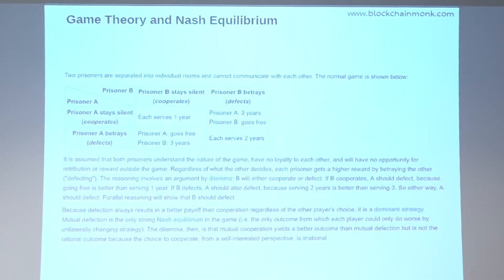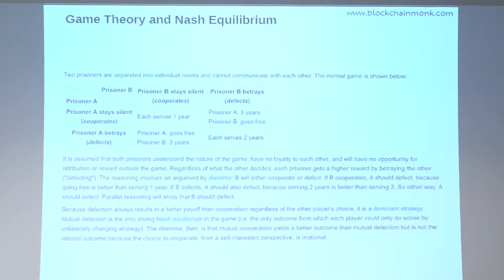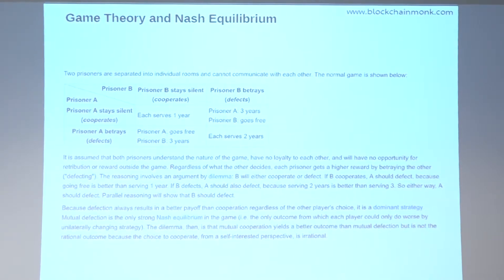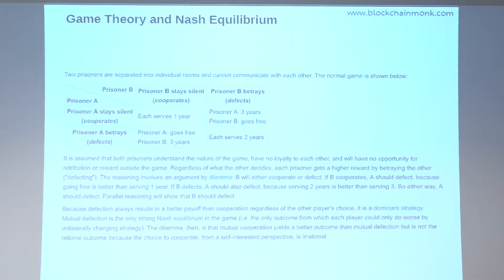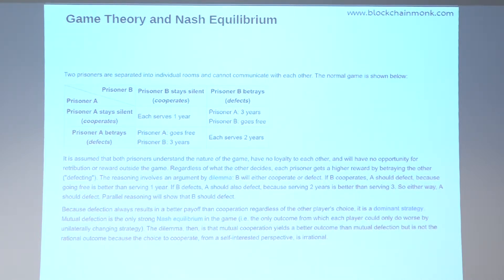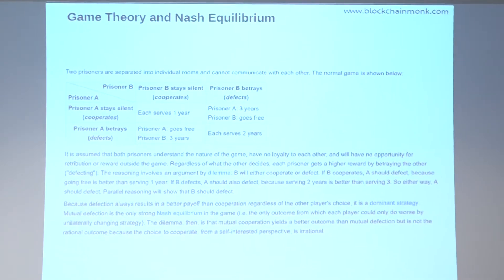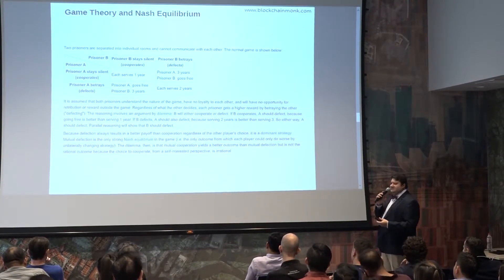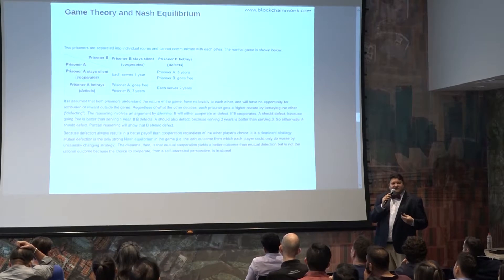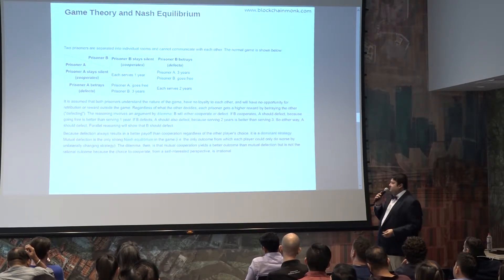This is very important because in the blockchain network, the success of the network is based on different actors behaving in a rational way, or incentivizing actors to act rationally. You don't want different actors to attack the Bitcoin network or the Ethereum network — if you attack the network, the network goes down. So we need to incentivize people. Game theory models are used to understand how to incentivize actors, and the prisoner's dilemma is a classical game theory model to understand how to incentivize good behavior.